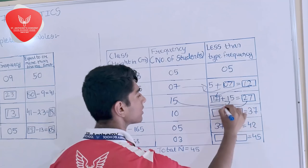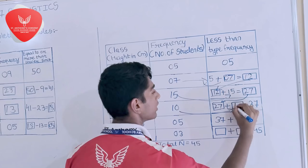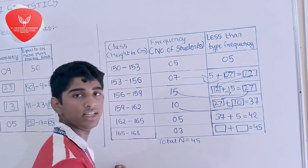This 27 will go over here and this 10 will come over here. 27 plus 10 is equal to 37.